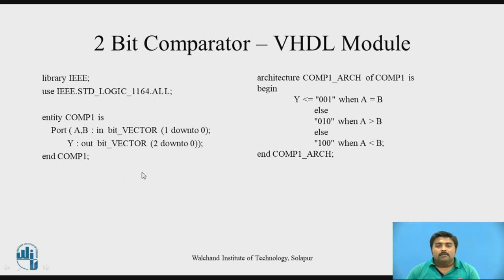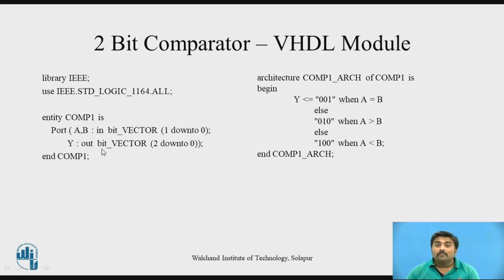The second part is the entity declaration. We write 'entity comparator', where comparator is the entity name. Then we write the port declaration, in which we mention what are the inputs and outputs. The inputs are A and B, both are 2 bits, so that's why it is a bit_vector — 1 downto 0, or you can write 0 to 1. The output is Y, which is of 3 bits — Y(0), Y(1) and Y(2) — so it is again bit_vector 2 downto 0. Then 'end entity'.